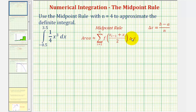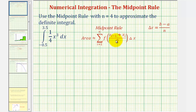Looking at the midpoint formula, notice how we have the sum of f of x sub i minus one plus x sub i divided by two. This gives us the midpoint, which we then substitute into the function to find the height of the rectangle. Then we multiply this by delta x, the width, to find the area of each rectangle.